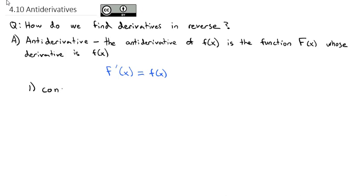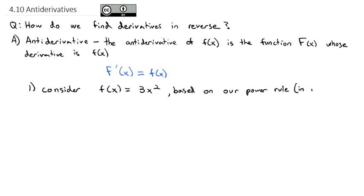Maybe it's better with an example. Consider f of x equals 3x squared. Based on our power rule, but working in reverse, we can conclude that capital F of x, the anti-derivative, must be equal to x cubed. Because the derivative of x cubed is 3x squared. So the anti-derivative of 3x squared is x cubed — it's the process in reverse.